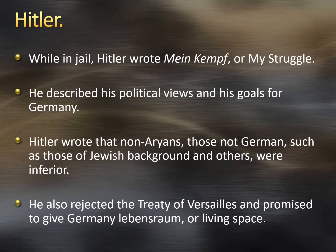In Mein Kampf, Hitler described his political views and his goals for Germany. He wrote that non-Aryans — those who were not of German descent, such as those of Jewish backgrounds, communist gypsies, and those who were mentally or physically disabled — were inferior. He also rejected the Treaty of Versailles, which many Germans were upset about, and he promised to give Germany Lebensraum, or living space, helping Germany spread its territorial borders again.